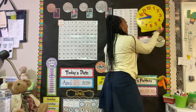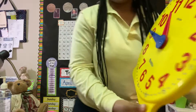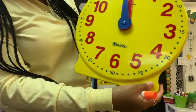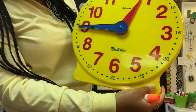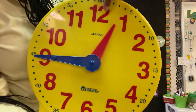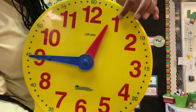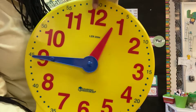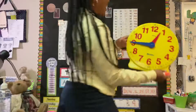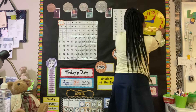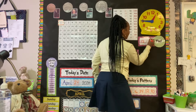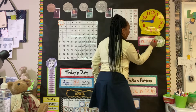And let's do our time. I'm going to put my pointer down. What time does that say? Look at the little hand — it's not quite on the one yet, so it's still 12:45. Good job. So I'm going to write 12 for the hour and 45 for the minutes.